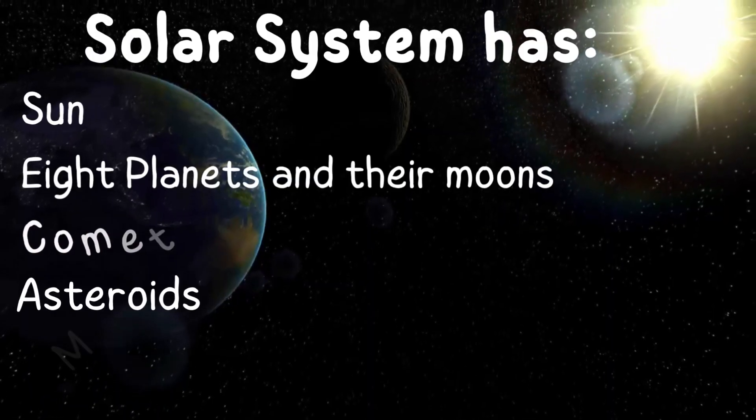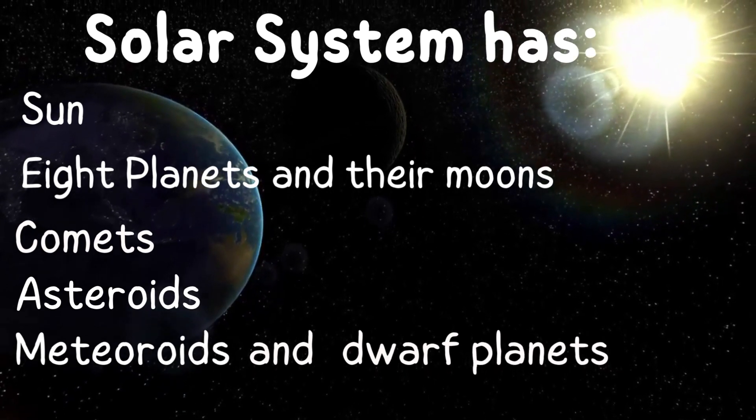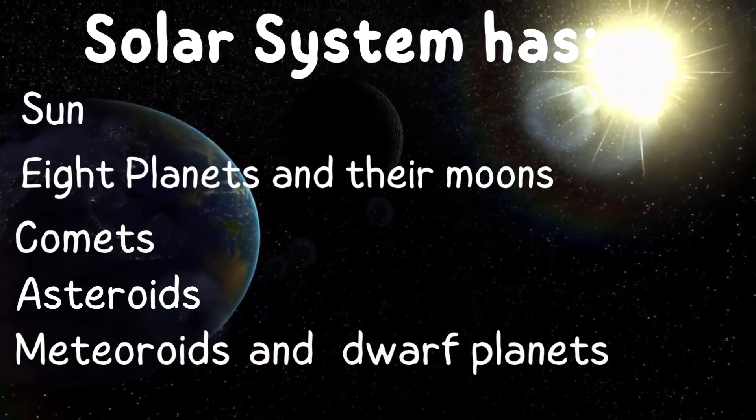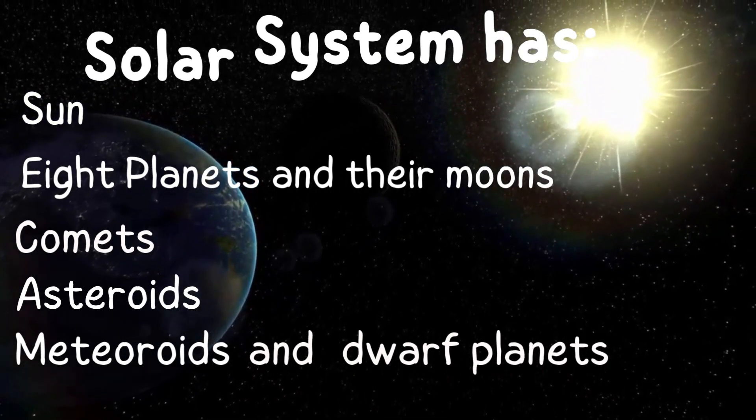The solar system has the sun, eight planets, asteroids, meteorites, and moons.